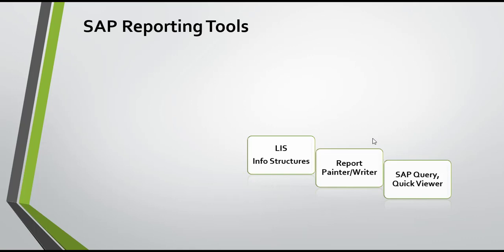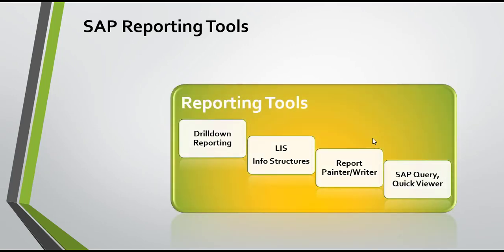Another tool is drill-down reporting. When you go to transactions FBL3N, FBL1N, or FBL5N, you can drill down by double-clicking on the report all the way to the document level. This is the drill-down functionality available in SAP reporting.